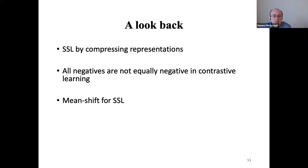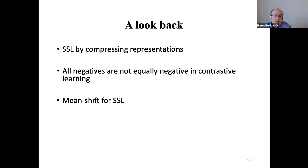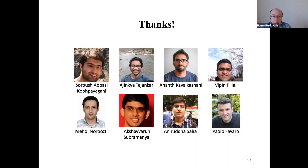To summarize: I talked about three main ideas. First, compressing SSL representations from a deeper SSL model to a smaller or lower-precision model for better performance. Second, ISD — treating negative pairs not as equally negative but as graded using soft label distillation, which is better than binary contrastive learning. Third, mean shift for SSL — a simple, well-known algorithm applied to deep networks that outperforms most state-of-the-art SSL algorithms. Thanks to my students and collaborators on all these works. Happy to answer questions.